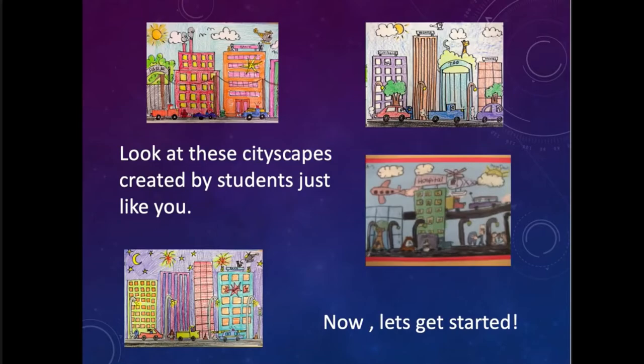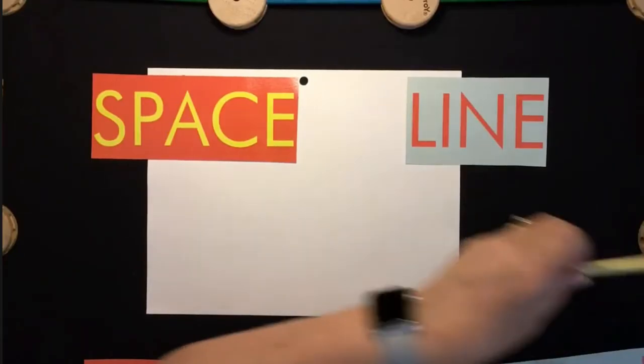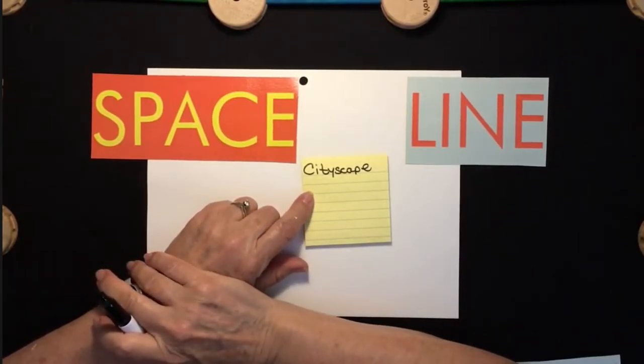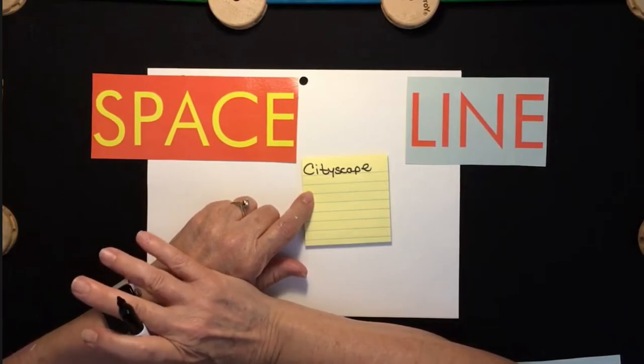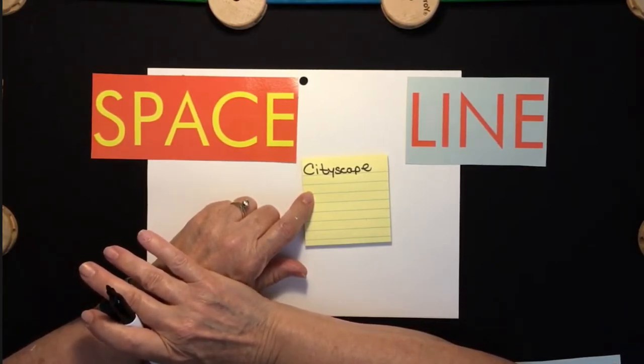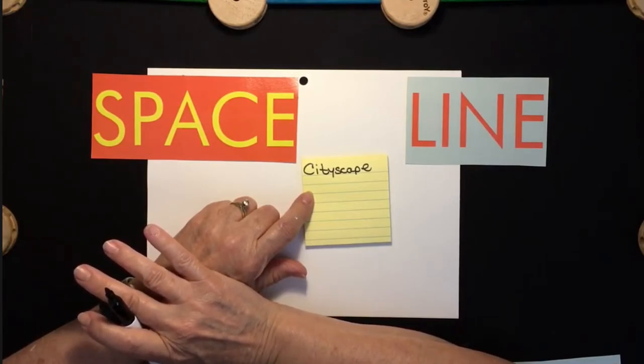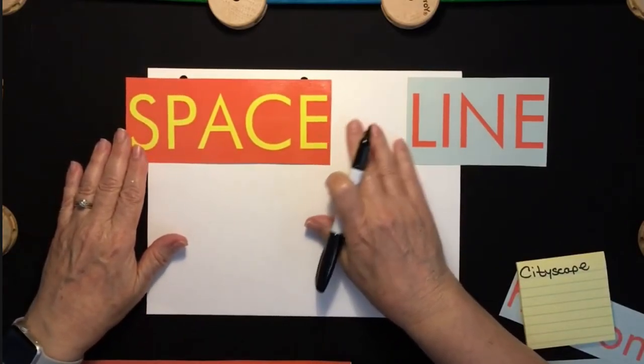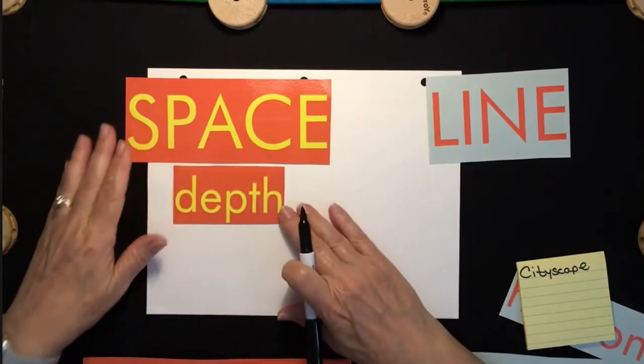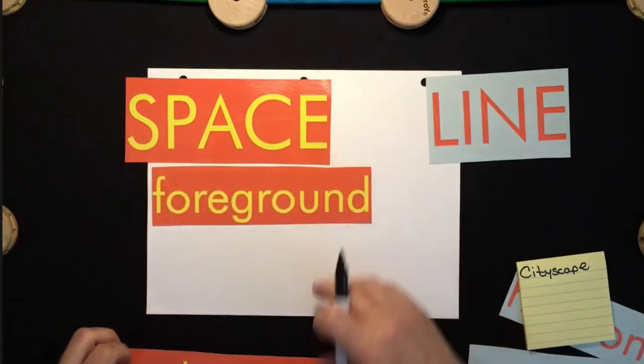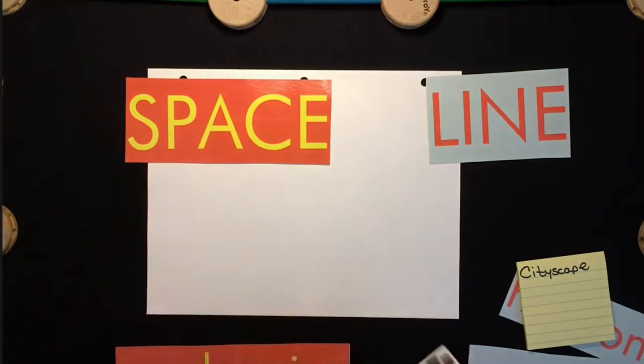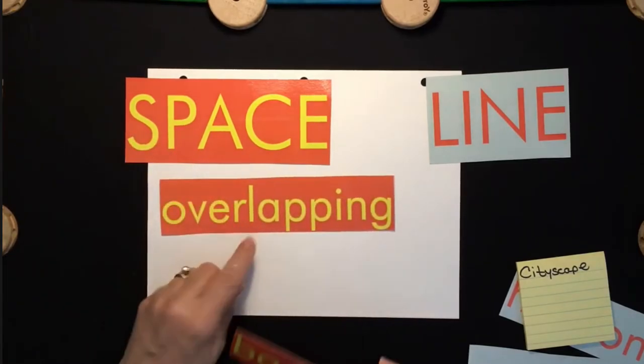Look at these cityscapes created by students just like you. Now let's get started. A cityscape is kind of like a landscape or a seascape. A landscape has land, a seascape might have the sea, and the cityscape has a picture of the city. Now we're going to try and create the illusion of space, and to do that we're going to create depth by having a foreground and a background. The way we're going to show foreground and background is by overlapping, an important word to create depth.